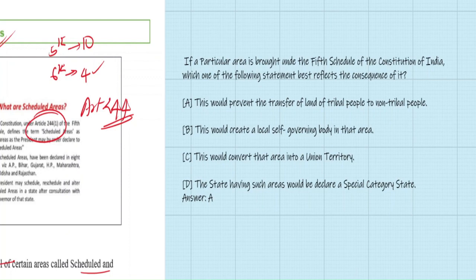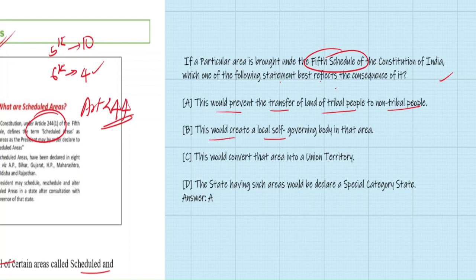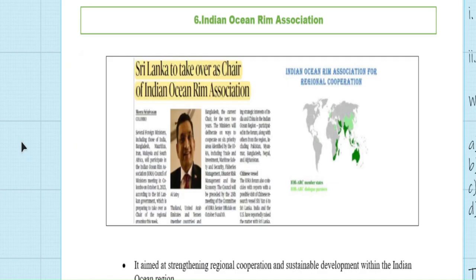Previous year question: 'If a particular area is brought under the Fifth Schedule of the Constitution of India, which statement best reflects the consequences?' Options: (A) it would prevent transfer of land of tribals to non-tribals; (B) it would create a local self-governing body; (C) it would convert the area into a union territory; (D) the state would declare a special category state. The correct answer is A — this is the right option; all other three options are wrong.